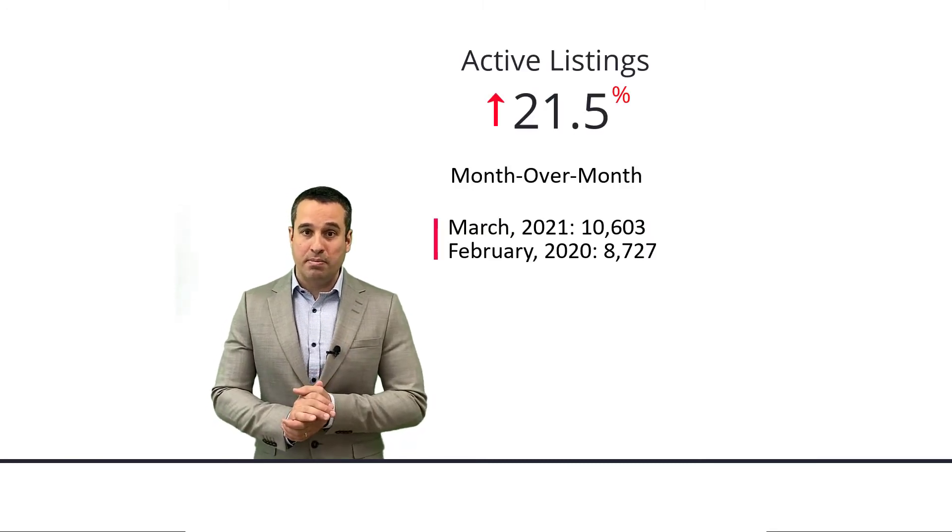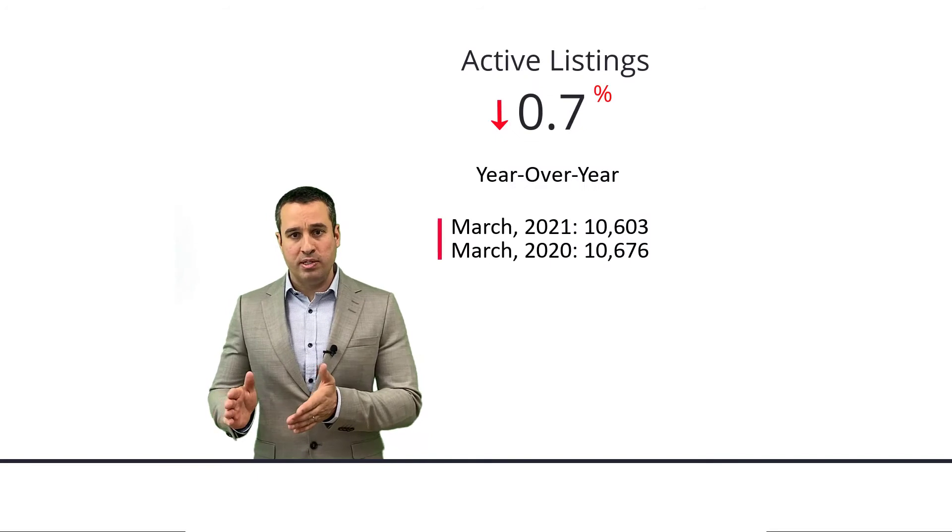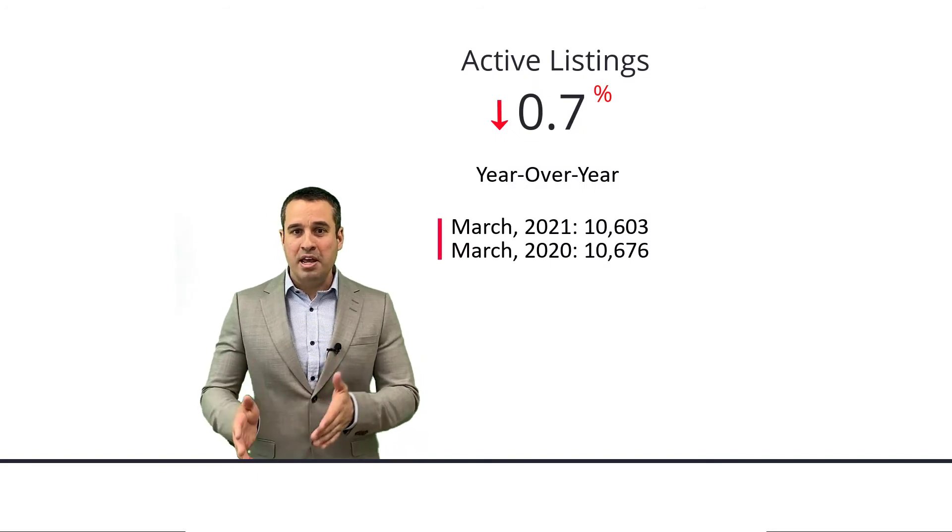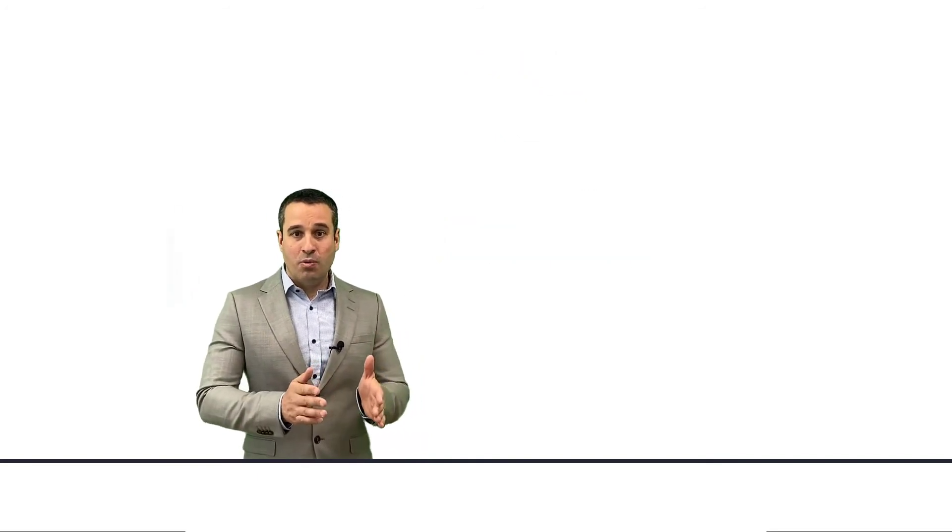Now active listings up 21.3% month over month, down 0.7% year over year. So again, if we're going to see sales doubling, we had better see the inventory keeping pace, which it has not. As a result, we're almost at 1.1 million dollars.